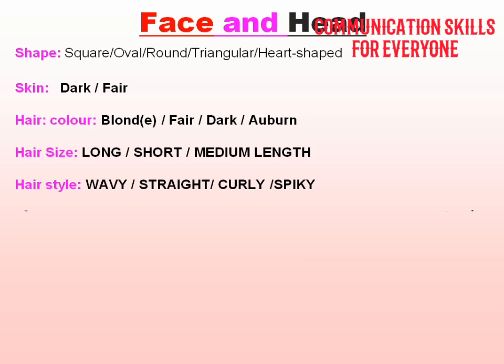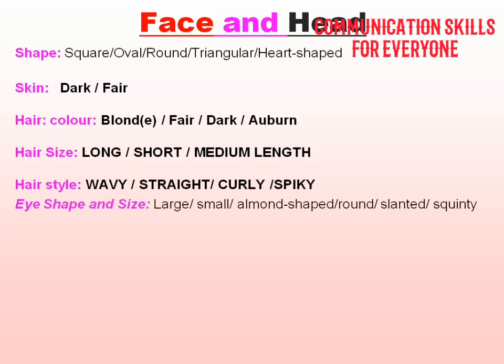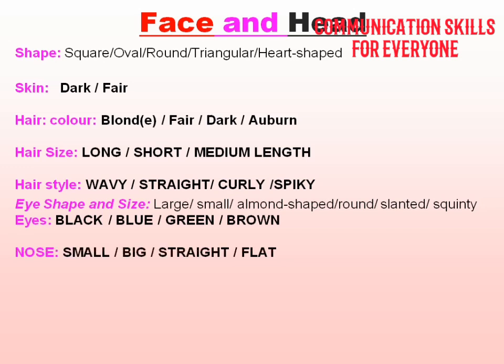For eyes, you can describe their shape — large, small, almond-shaped, round, or slanted — and their color: black, blue, green, or brown eyes. For the nose, you can say small nose, big nose, flat nose.